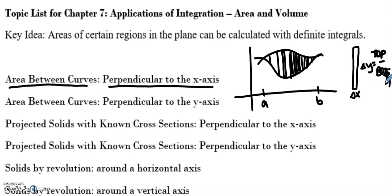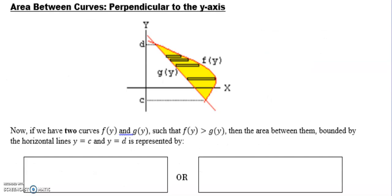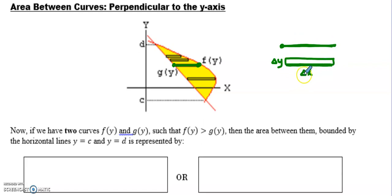Now we're going to switch and talk about what happens when we draw perpendicular to the y-axis. Instead of painting top to bottom, we're going to paint from right to left. Looking at one representative paint stroke, it's really a rectangle where the infinitesimally small part is dy, and the length is the change in x — that's the right x value minus the left x value.